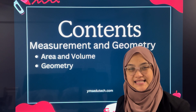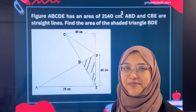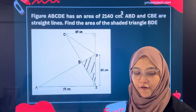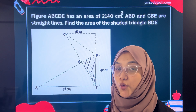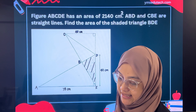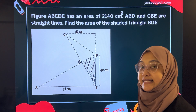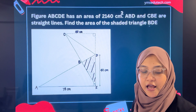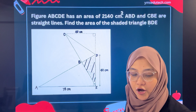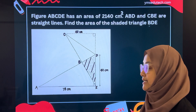Let's take a look at a question. Figure ABCDE has an area of 2,140 square centimetres. ABD and CBE are straight lines. Find the area of the shaded triangle BDE.